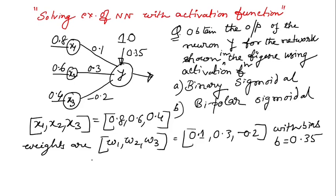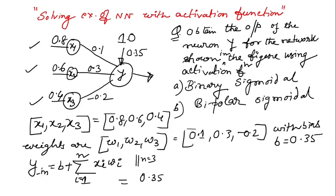Now, how to solve this? So you know that input Y underscore N can be written as bias plus I equal to 1 to N summation XI WI. And here N equal to 3 because we have three inputs 1, 2 and 3. So how you will write? So it is equal to B is nothing but 0.35 bias plus. This will be nothing but B plus